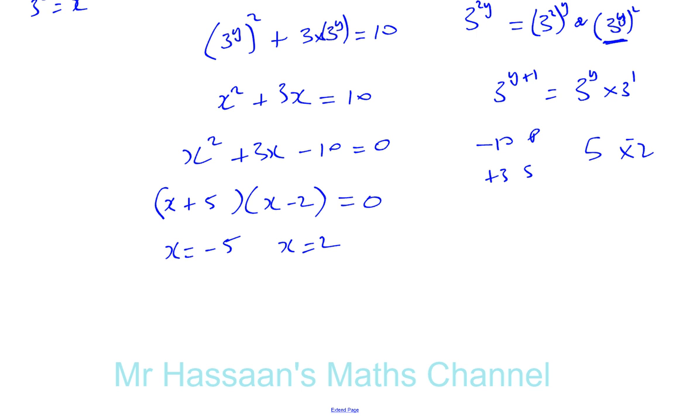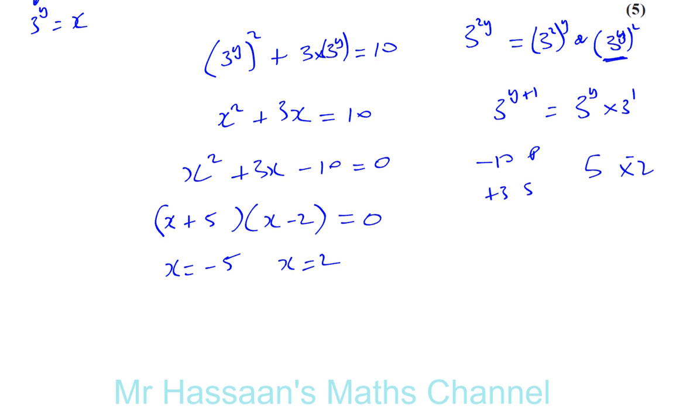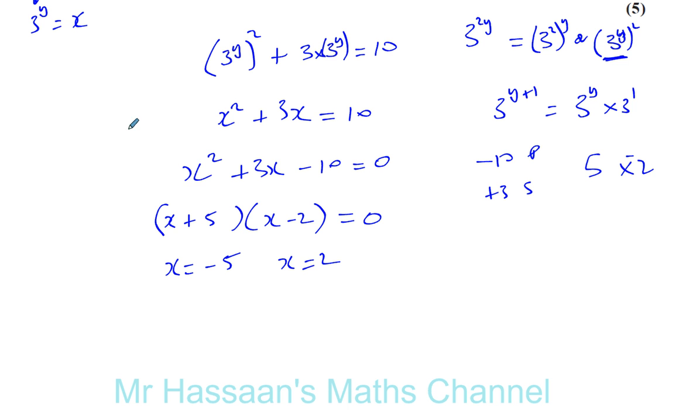So now we can say, all right, we called x, we called 3 to the power of y equals x to make it look simpler for us. Now we can say, okay, we know that x is the same as 3 to the power of y. So we can say this is 3 to the power of y is equal to negative 5. And we can have this is 3 to the power of y is equal to 2.